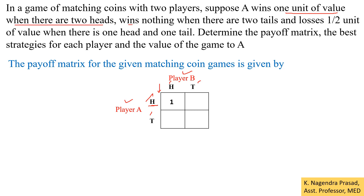Similarly, player A wins nothing when there are two tails — one tail for player A and one tail for player B — so here we enter zero. And losses of one unit of value when there is one head and one tail, so here we enter minus one-half. From player A's point of view, he gets a loss if he gets one head and one tail, so we enter minus one-half.